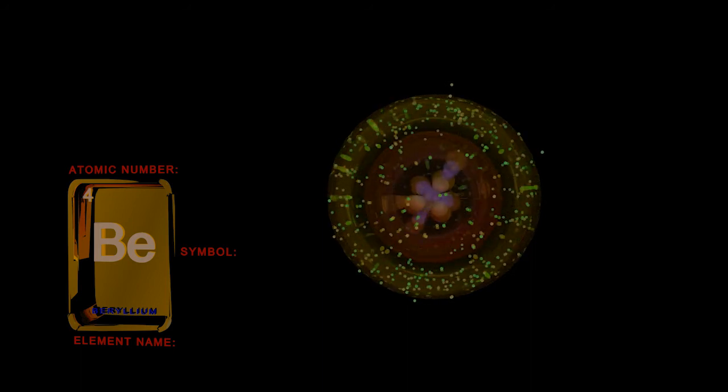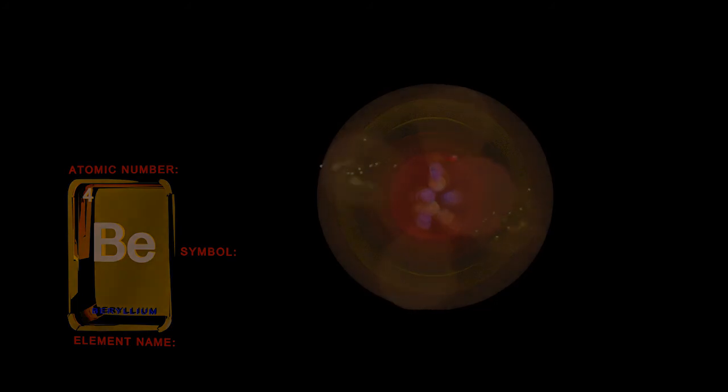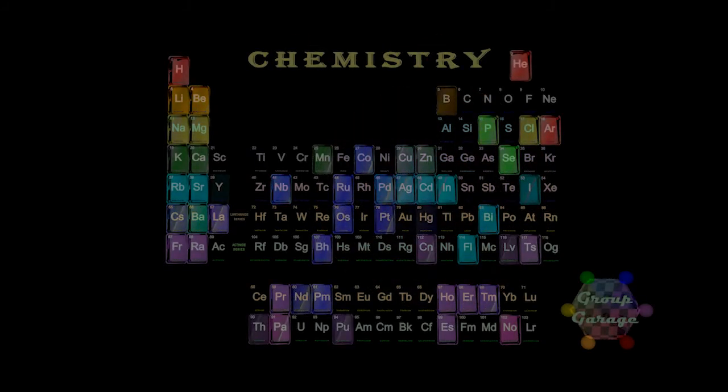Our next video, we will stay in the second principal energy level n equals 2, and while in the same shell, we'll start our exploration of the shape of the next subshell, which is not spherical. We will look at the p subshells for boron, carbon, and nitrogen, and introduce Hund's rule. We hope to see you in that video, and if you like these videos, please give them a thumbs up, or a comment down below, and help the channel grow by telling a friend or becoming a subscriber. Thank you.